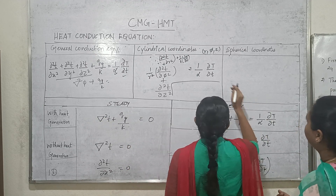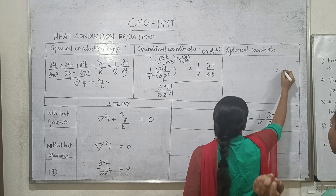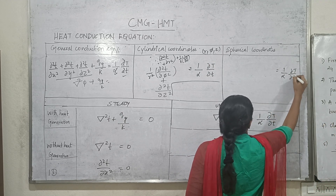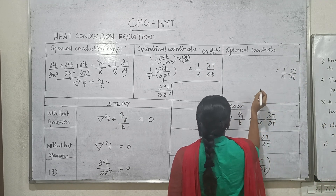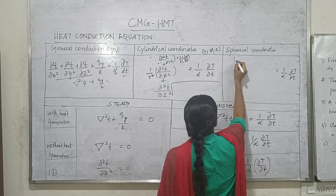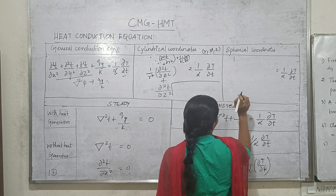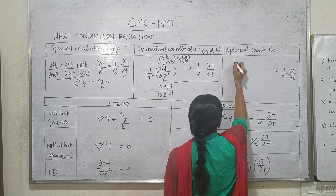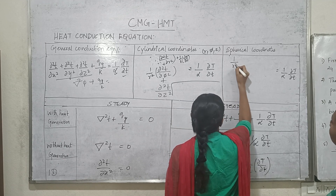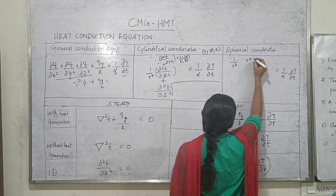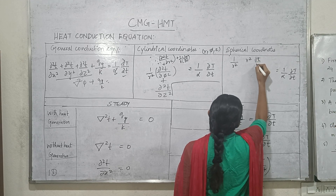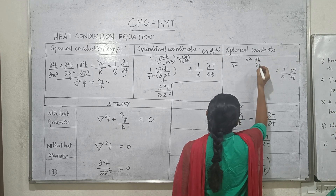This is the heat conduction equation in spherical coordinates. It equals 1/α · ∂T/∂t. The coordinates are r, φ (theta), and a third direction. The x-term is (1/r²) into r², and we differentiate ∂T/∂r.